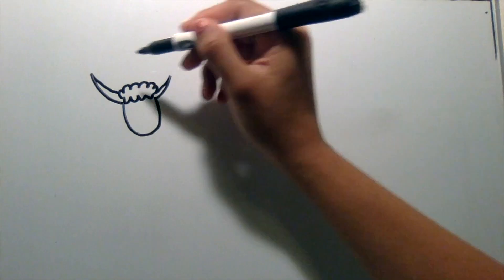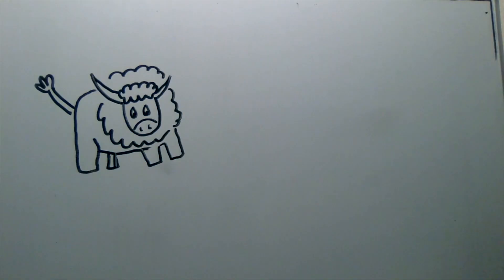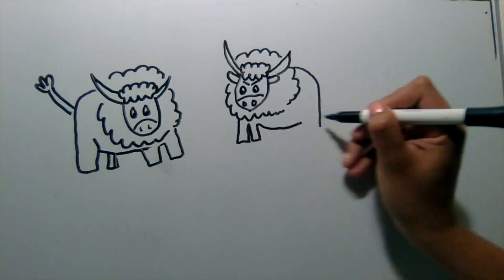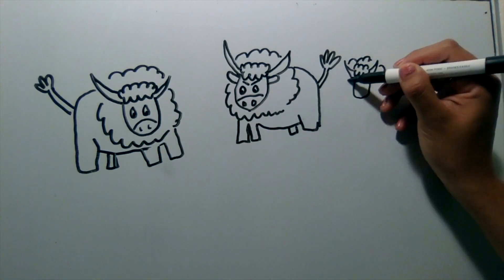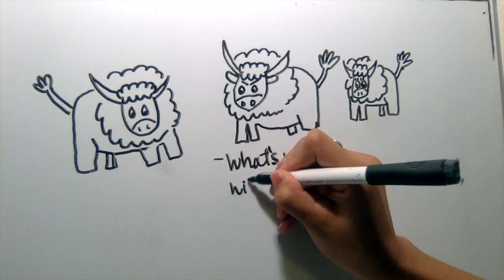As Mark grew bigger, so did his horns, but one horn grew slightly faster than the other. Daddy and mommy Buffalo noticed how the abnormality had not gone away. They thought of themselves as perfect and would not stand to have an imperfect son.